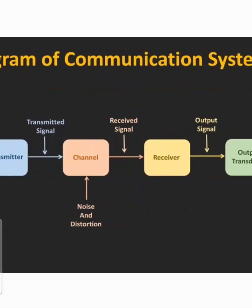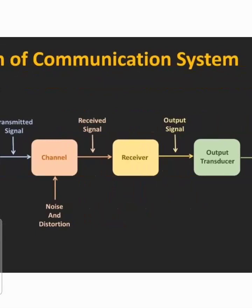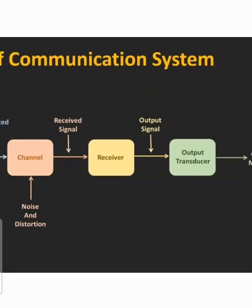At the receiver side, the received signal is weak and will be amplified. After amplification of these received weak signals, the demodulation process will be performed with the help of a demodulator block. After demodulation, the respective signals will again be power amplified and voltage amplified.